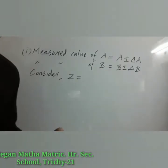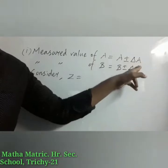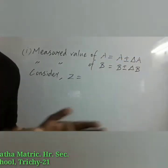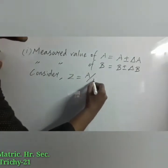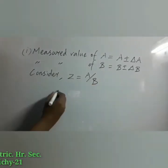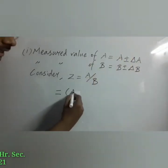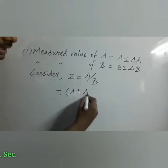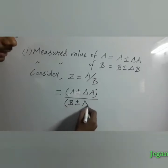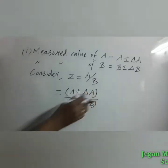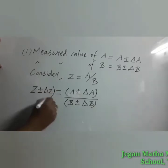Now we are going to discuss the error in the division of two quantities. As before, we take two quantities A and B with absolute errors ± del A and ± del B respectively. We take the mathematical operation of division, so Z = A/B. With errors included: Z ± del Z = (A ± del A) / (B ± del B). Because of these absolute errors, the result also has an error del Z.